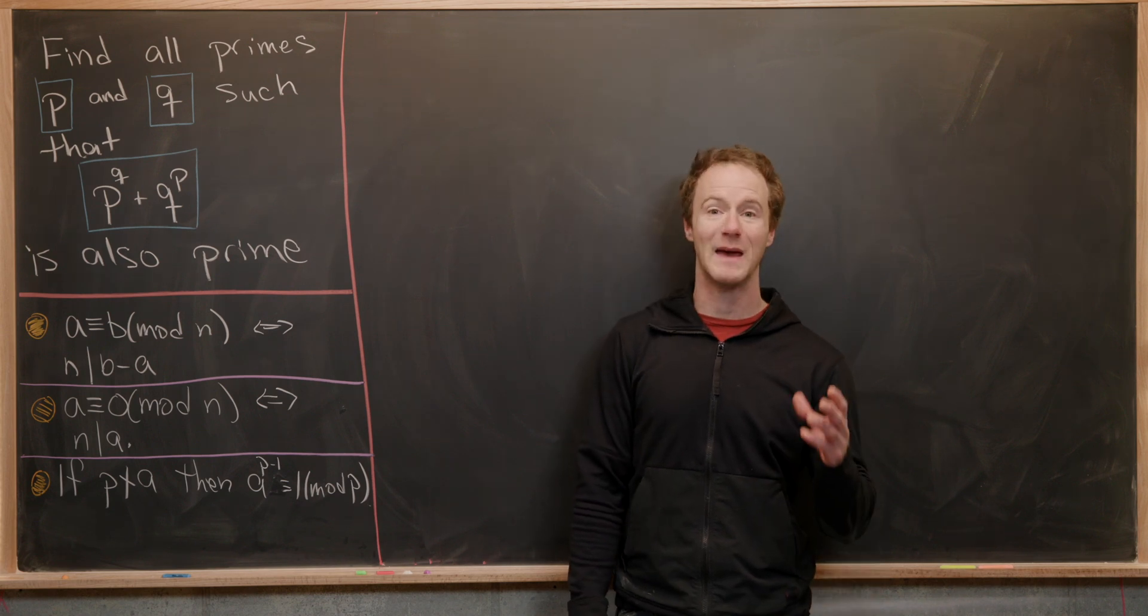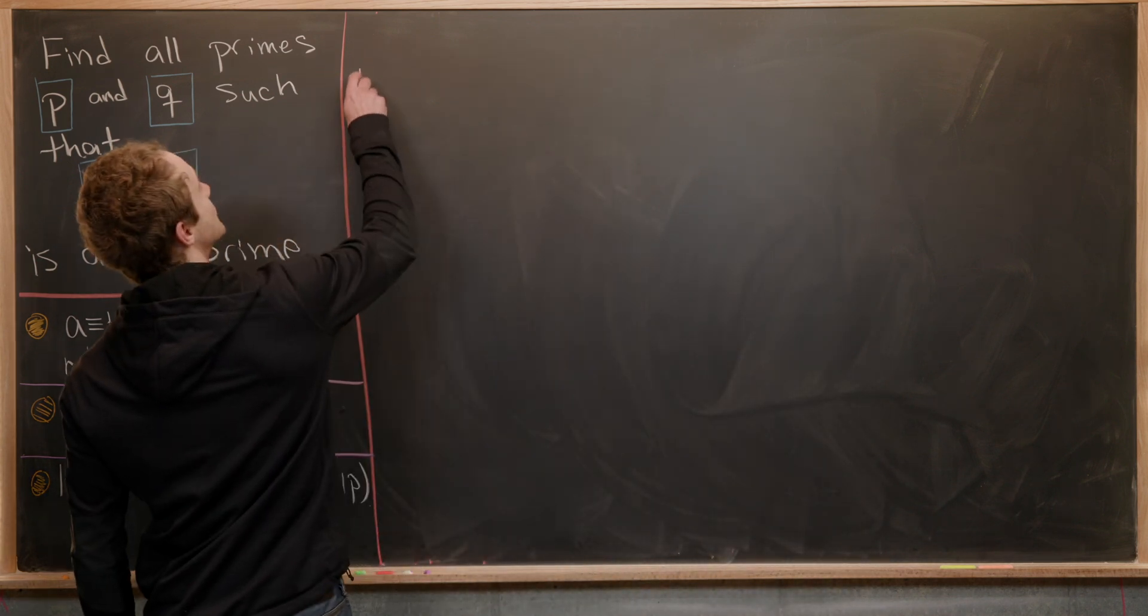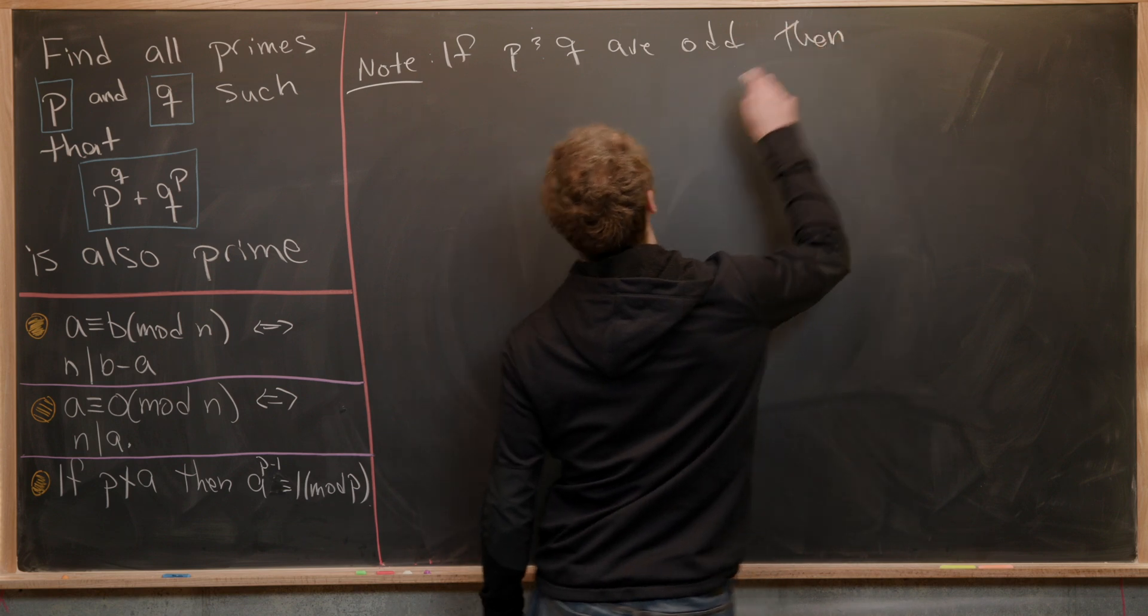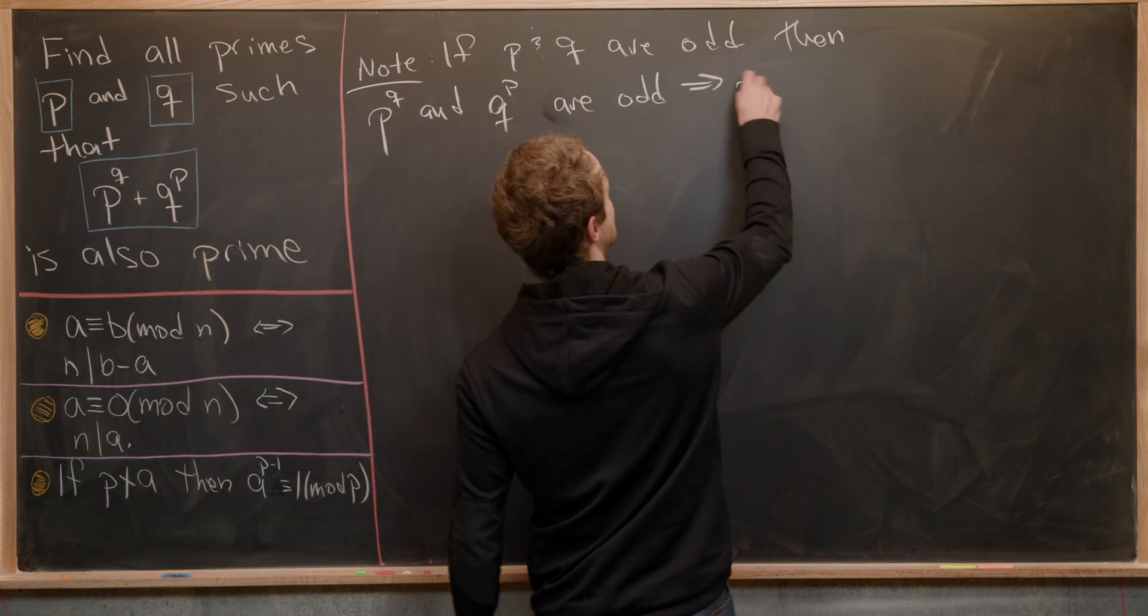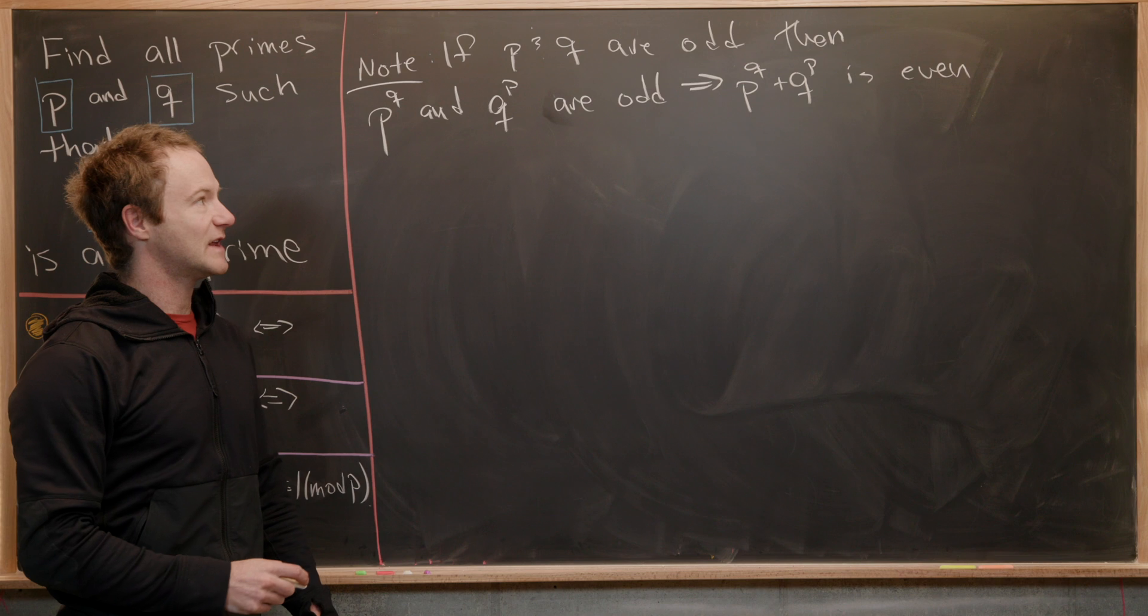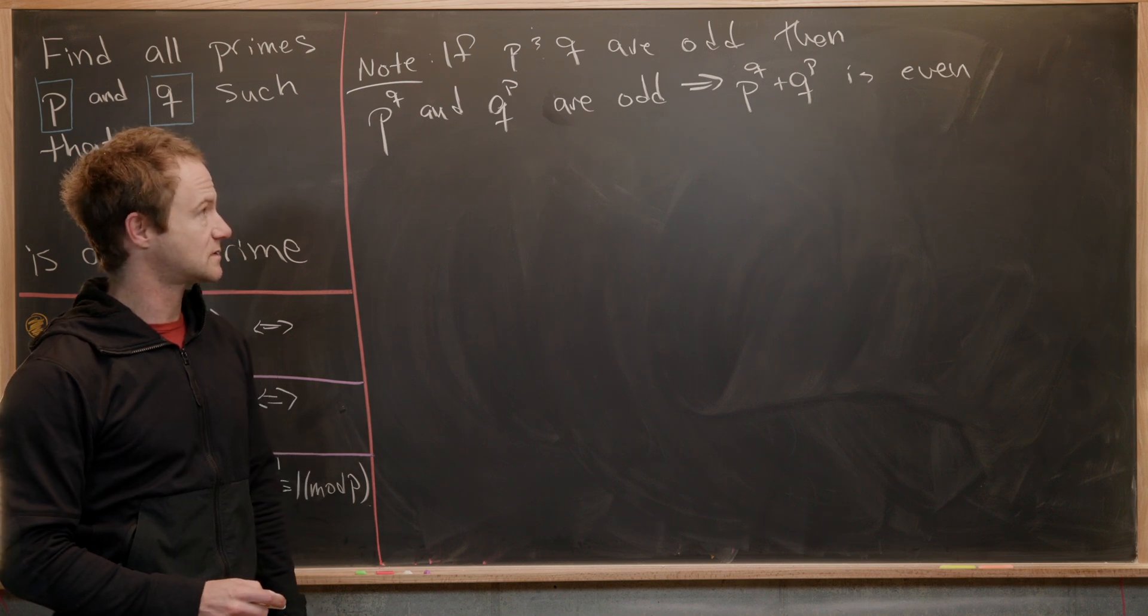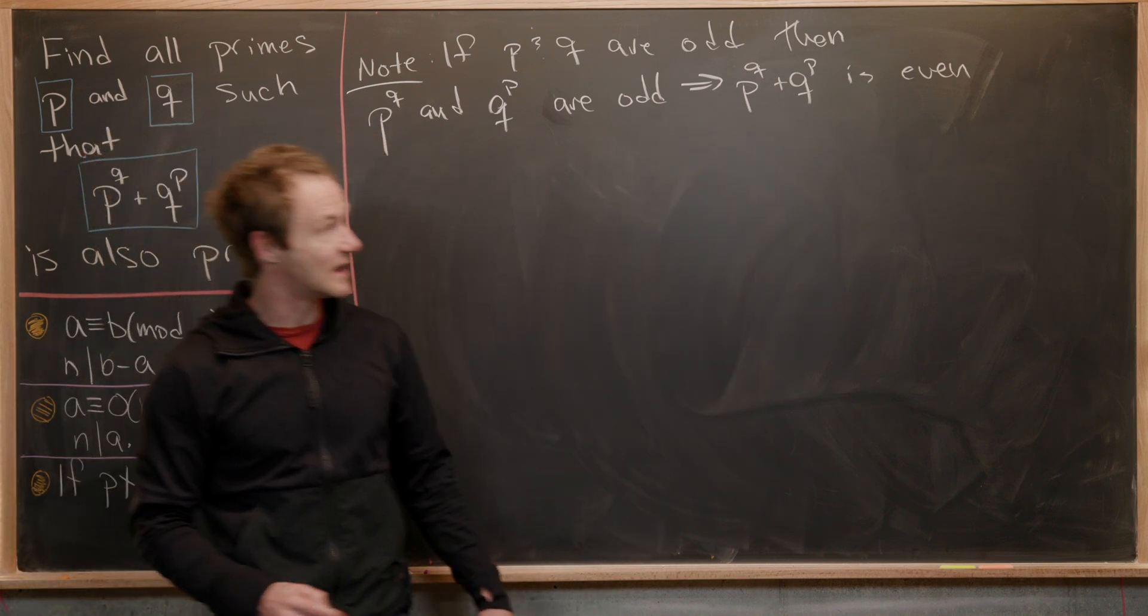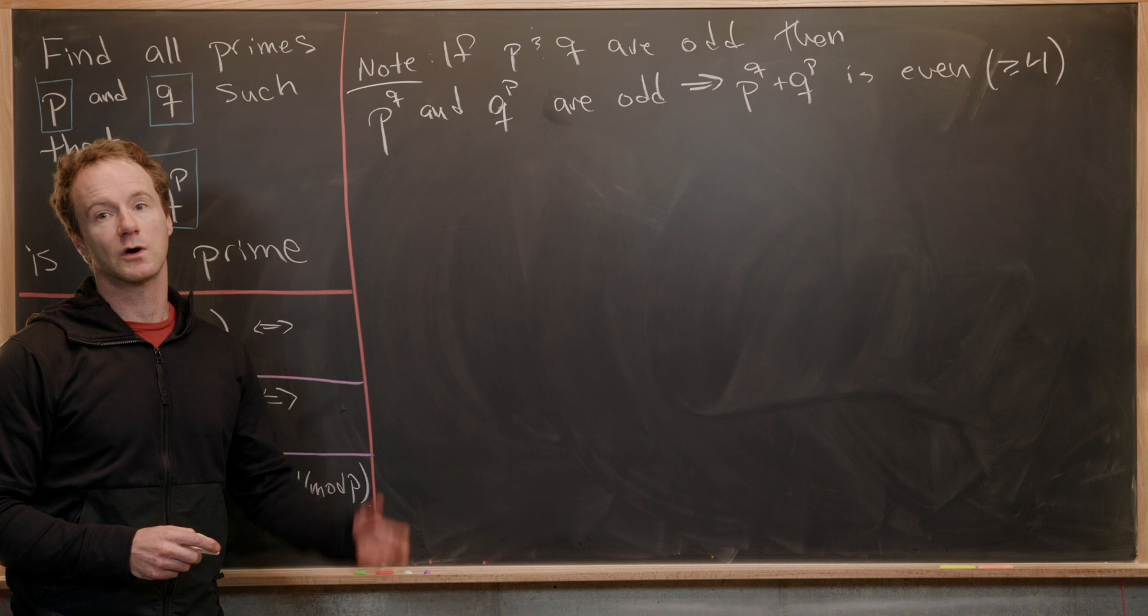First off, we'll notice that p and q may not both be odd primes. Notice if p and q are odd primes, then p to the q and q to the p are odd. But that tells us that p to the q plus q to the p is even. Furthermore, we know that it's even and it must be bigger than two. Because given that p and q are odd primes, they're bigger than or equal to three, which tells us that this is an even number which is bigger than or equal to four. But all even numbers that are bigger than or equal to four are composite.